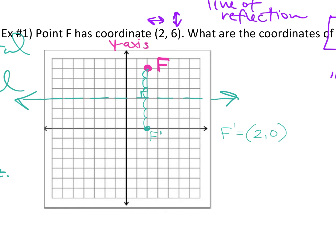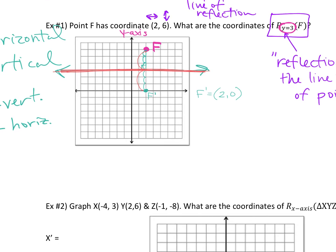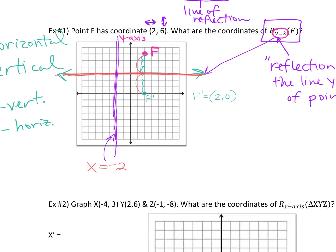Does that make sense? Just think about folding the paper — where would it stamp if I folded it? Why isn't it 7 down instead? Because we're not reflecting over the axis; we're reflecting over this line. Think about folding the paper at that line — if F is 3 above, then we need to go 3 below. What if our line of reflection was x equals negative 2? That would be left 2 going vertically — x equals negative 2 is a vertical line, and y equals 3 is a horizontal line going through 3.